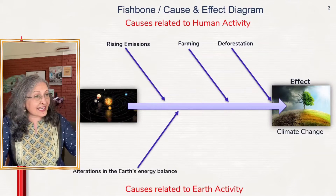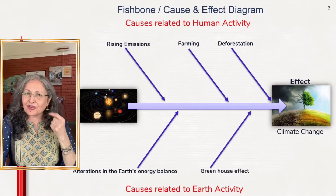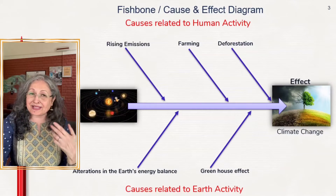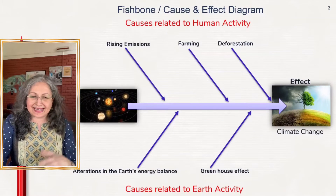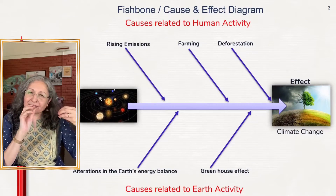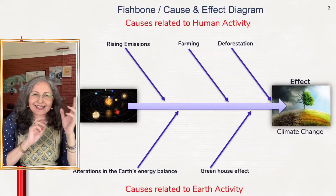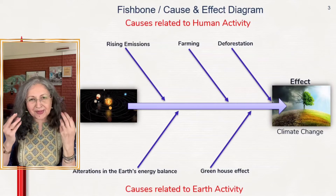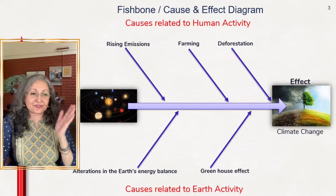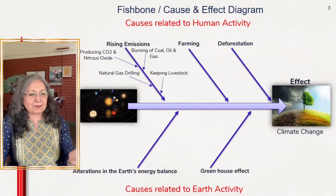There are other causes related to alterations in the earth's energy balance itself, even though it will take millions of years for that to happen, and of course the greenhouse effect. Once you have these sub-bones of the fish with their main cause headings — like rising emissions or greenhouse effect — you start adding the sub-causes to each. For example, under rising emissions I've put natural gas drilling, burning of coal, oil, etc.